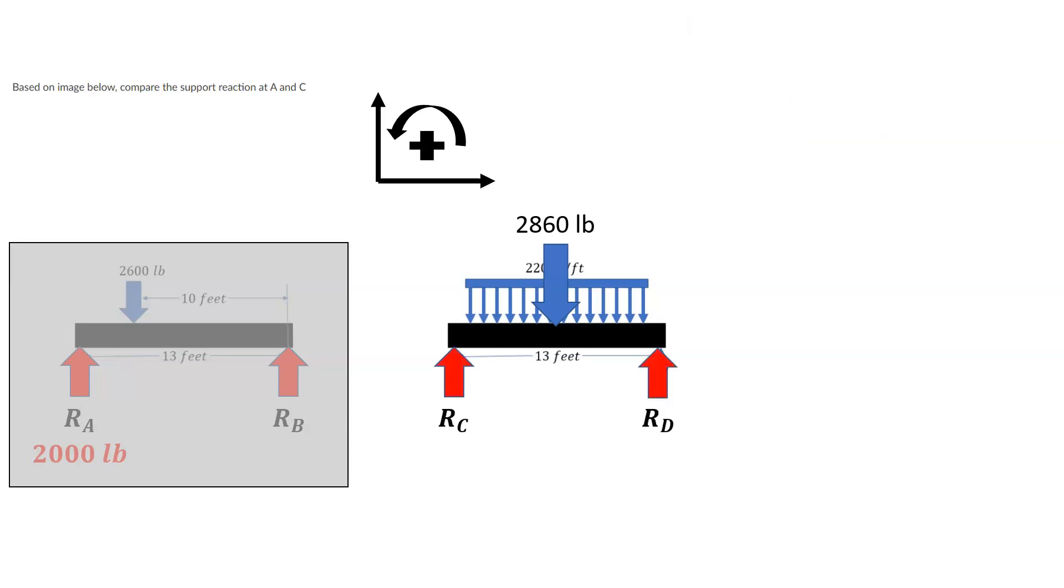Alright, so again, simply supported beam in both cases, and there's a reaction at C and a support reaction at D. So what we can do is the same thing we did for the other side, which is take a moment about D. If we take a moment about D, the distance from D to D is 0, so that drops that one out of the equation.